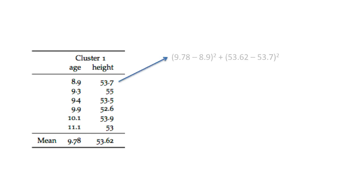For cluster one, we compute the squared deviation from the mean. The mean is 9.78. Since we are squaring it, it doesn't matter which value comes first. So it's basically (9.78 − 8.9)², then (53.62 − 53.7)². That is the amount of squared deviation for the first case.